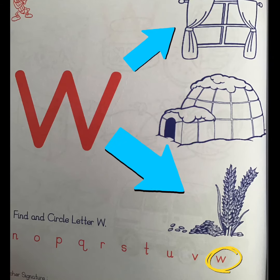W is for window. W is for wheat. And then circle the letter W. Thank you.